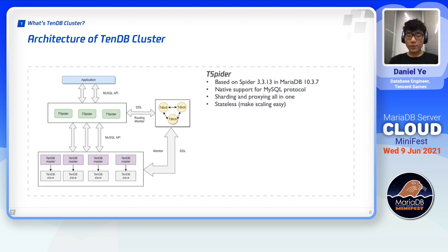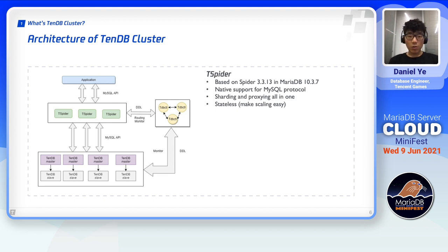As I said before, Spider is actually a storage engine inside MariaDB, so it naturally supports MySQL or MariaDB protocols and can process basically any requests using MySQL standard APIs. When T-Spider receives a query from the application or a user, it will first look into its routing tables and then rewrite and distribute the query to the underlying backend data nodes — in our case, those are the TenDB instances at the bottom. After all the data nodes finish executing the query, T-Spider will collect and pack the results and then send them back to the application or the user.